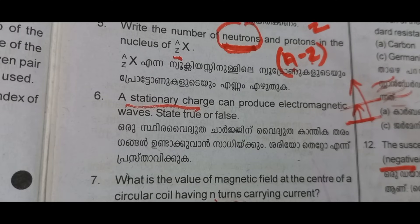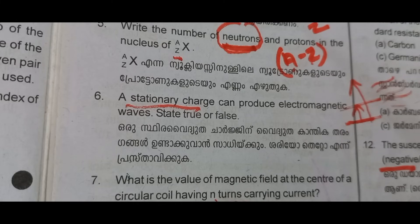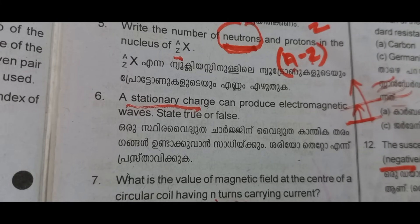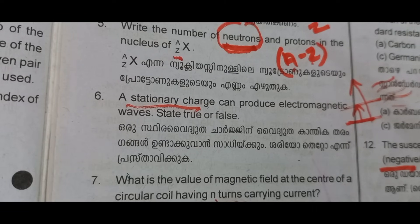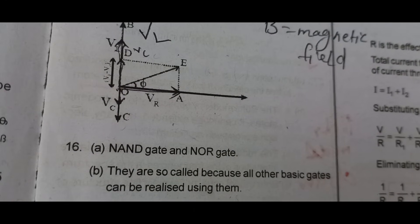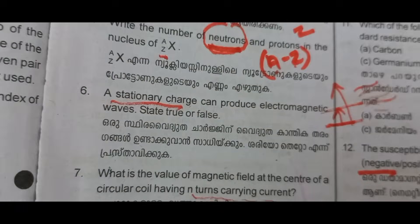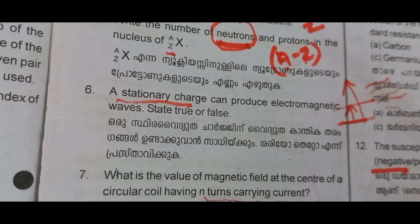Can a stationary charge produce electromagnetic waves? The answer is false. A stationary charge cannot produce electromagnetic waves; only an accelerating charge can produce electromagnetic waves.